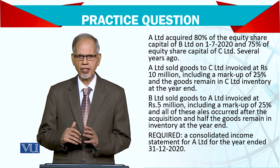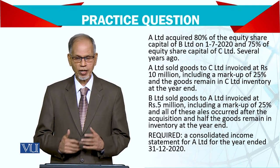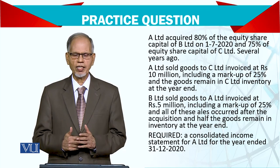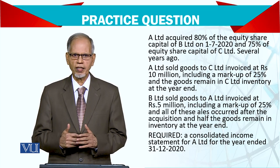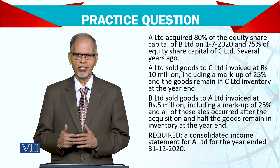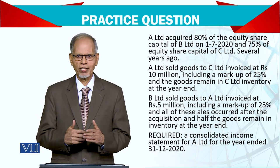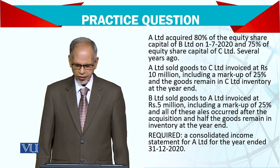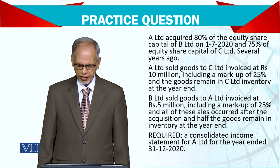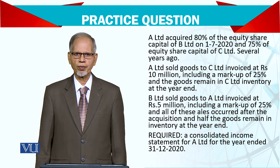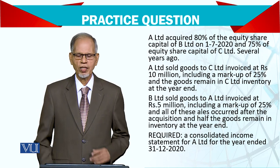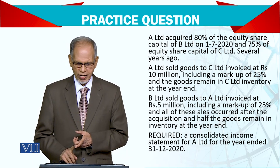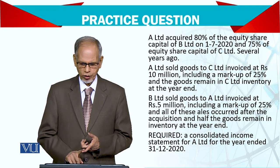Since the acquisition happened during the year, your profit will start from that date onward — your sales and costs will start from that date onward. And A also holds 75% equity of C Limited, acquired several years ago. So A has 80% in B and 75% in C.